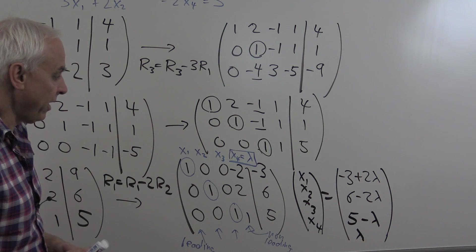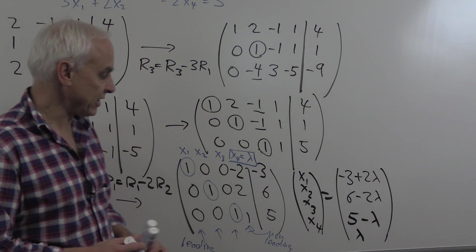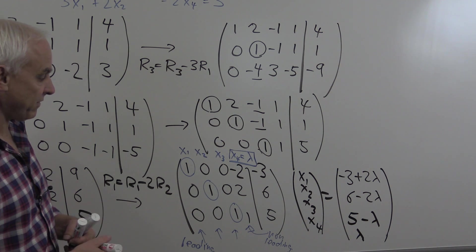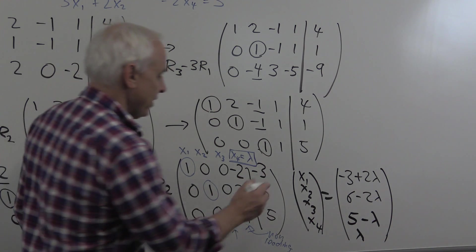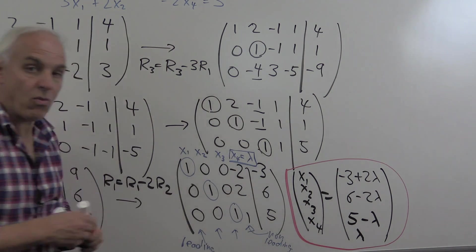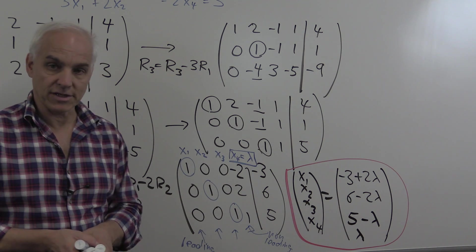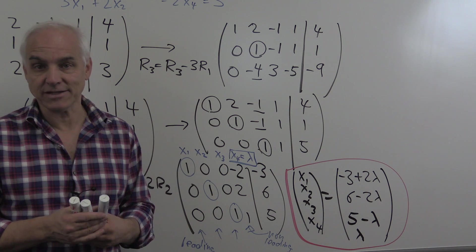x4 was the actual variable that corresponded to the non-leading column. That's the non-leading variable. And so in terms of that, we have expressed the other variables x1, x2, x3 in terms of that parameter lambda. That's what the row reduction allows us to do. There's our final solution showing us that there's a one-parameter family of solutions to this system. This is a line in a four-dimensional space, if you like.